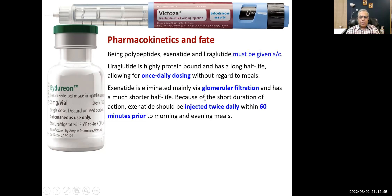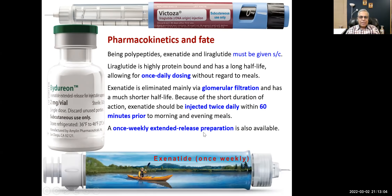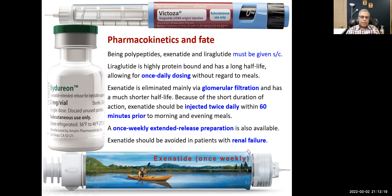Because of its short duration of action, exenatide is injected twice daily, 60 minutes prior to morning and evening meals. An extended-release once-weekly preparation is also available. Exenatide should be avoided in patients with renal failure because it is eliminated by glomerular filtration.